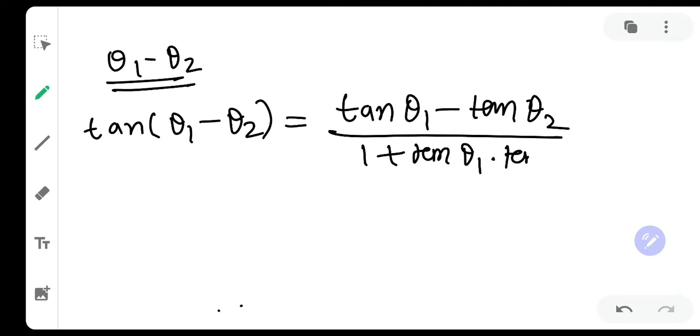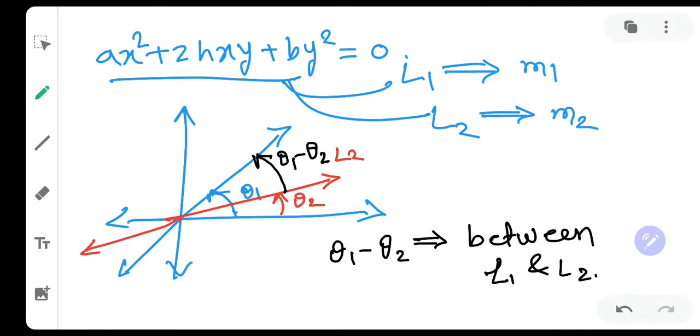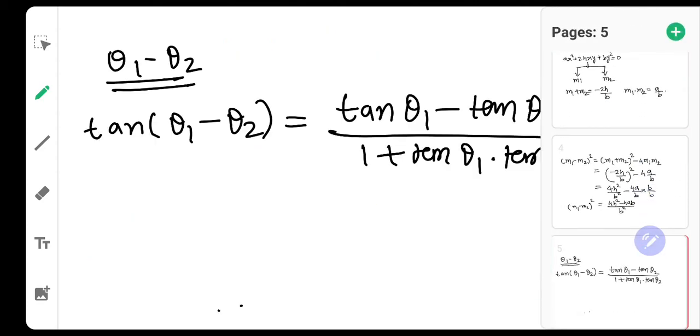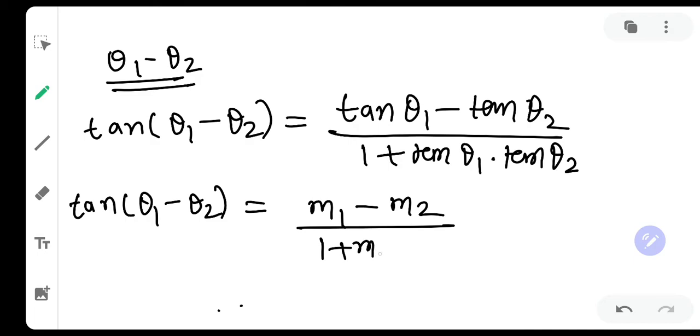Going back to the original diagram, we know that M1 is nothing but tan θ1 and M2 is nothing but tan θ2. So we are going to make use of this. So let us go back to the original sheet. What will I say? I will say tan(θ1 - θ2) is nothing but (M1 - M2)/(1 + M1M2).